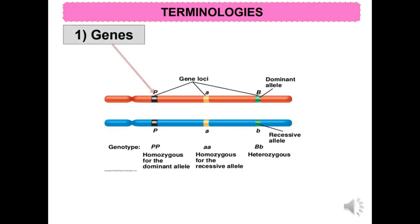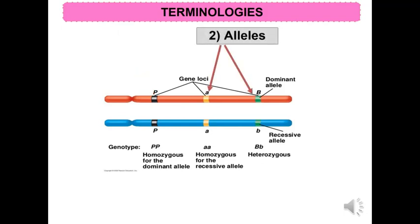A gene is a basic unit of heredity located on a specific locus of a chromosome that determines a specific characteristic in the organism. It consists of a DNA segment that encodes a particular protein — for example, height. An allele is an alternative form of a gene; one member of a pair that is located at a specific position on a specific chromosome, represented by an alphabet.